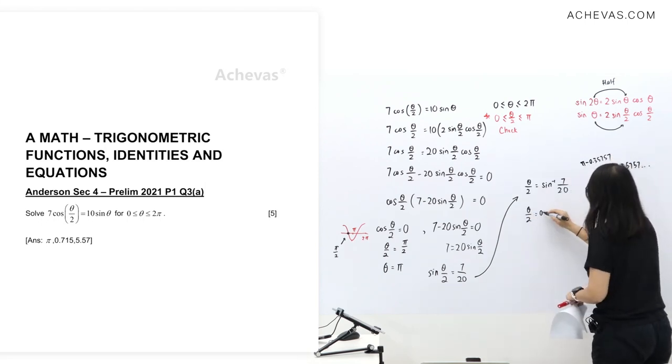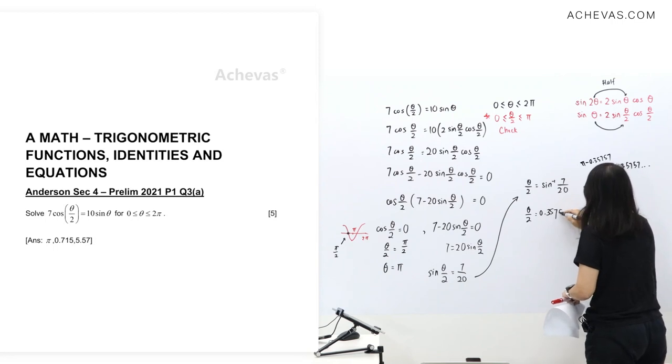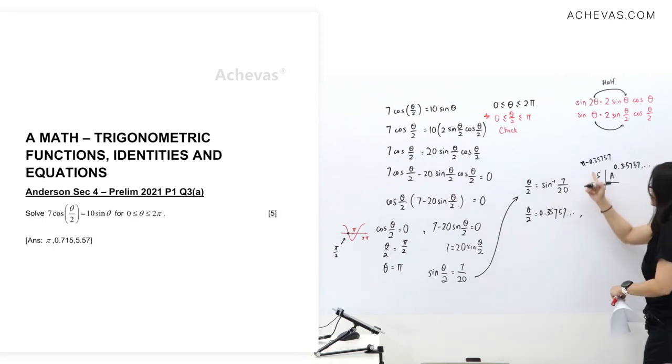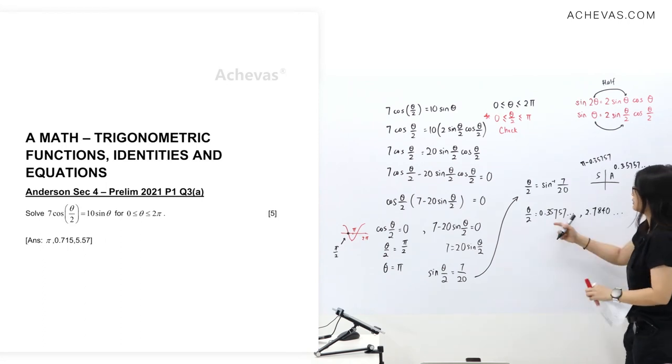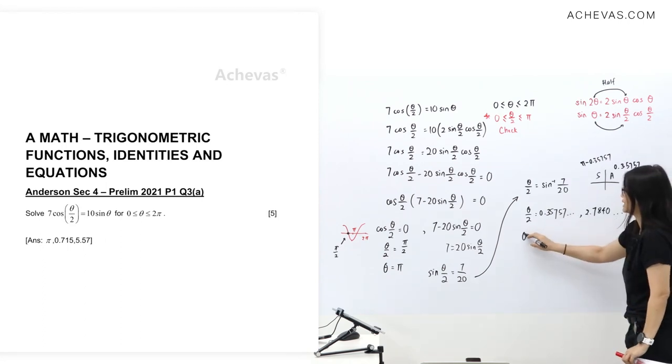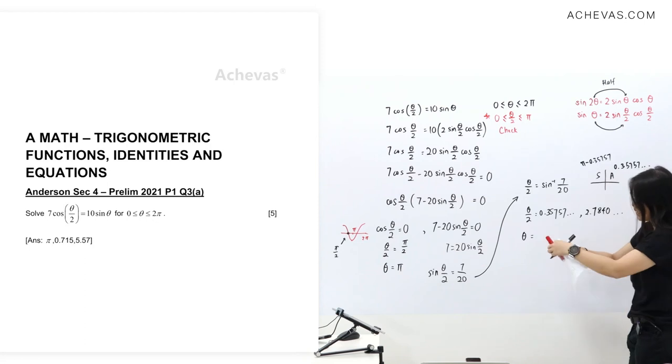The first answer and the second answer, you will get, remember to write more than three significant figures. As many as possible. If you write more than three, that's fine. So do not write too early to three significant figures. We still have next step to do where we need to multiply these two answers by two to get theta.